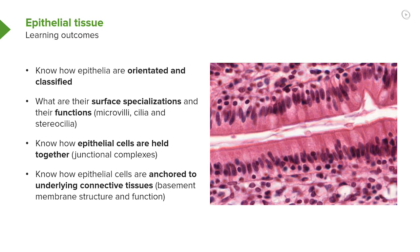At the end of this lecture, I would like you to understand the following. Firstly, that epithelial cells are orientated in certain ways. They're also classified or named differently depending on how they appear and, in some instances, their functions. They have certain surface specialisations that have a very important role in some parts of the body. Epithelial cells are very tightly held together by junctional complexes, and I'll explain the different types of junctional complexes.